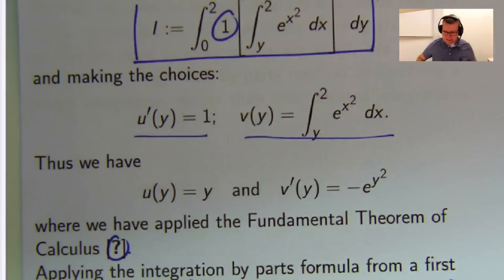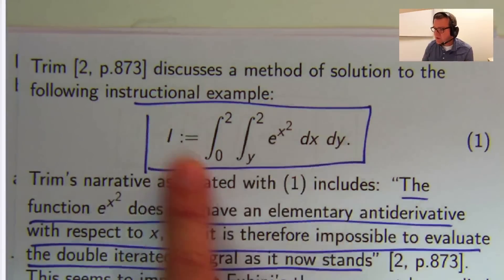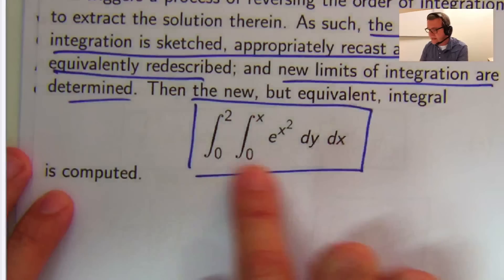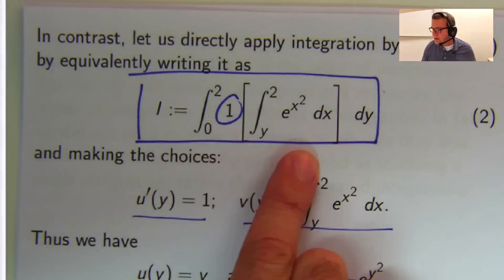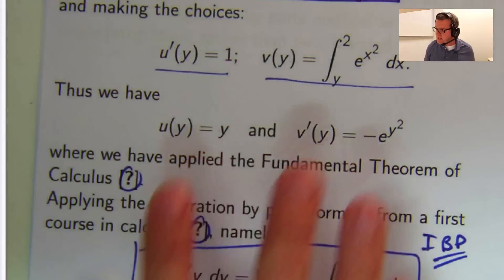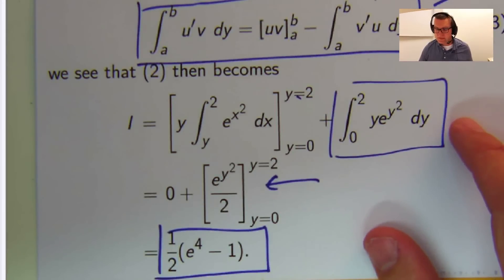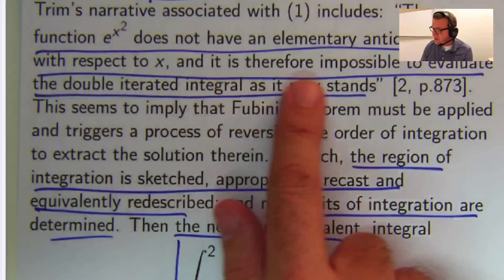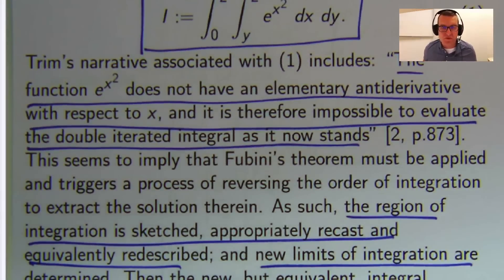So let me just go over that again. Instead of doing what they do in all the textbooks with this integral and reverse the order of integration, so you get that, we decided to integrate by parts, by putting this bracket in a factor of 1. We made our choices of u-prime and v, and that led us to the other two, and then applied the integration by parts formula. So what Trim says then, is it impossible to evaluate the double integral as it now stands? It's not impossible. You can just do integration by parts. Pretty cool, huh?